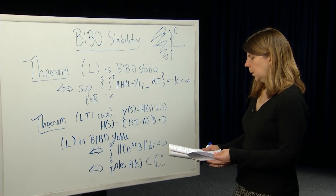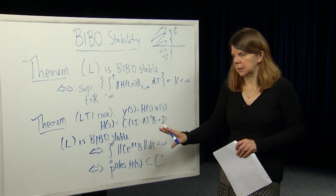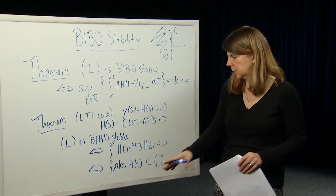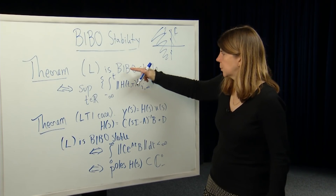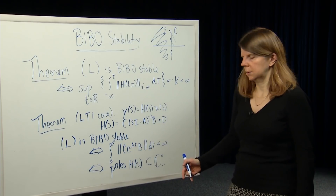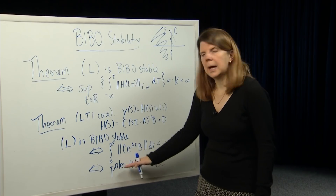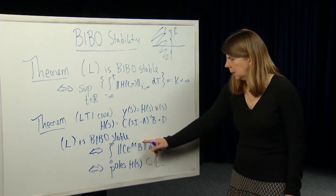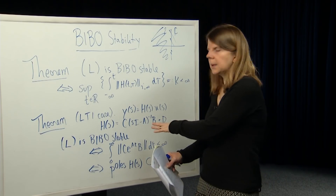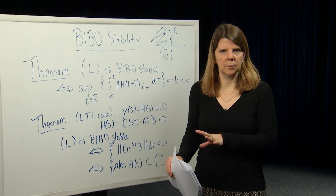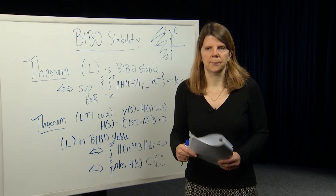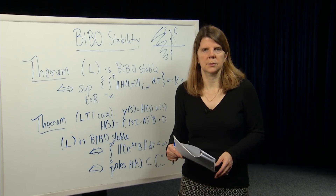We're going to move on and think about examples of this and how to use this idea. This is just a simple test: compute the transfer function and look at the poles. We can prove all these results, but we won't do so in these modules. In the next module, we're going to move on to the characterization of state space stability, but we'll come back and do examples comparing bounded input-bounded output stability with state space stability, using the pole condition of the transfer function as a test. Thanks very much.